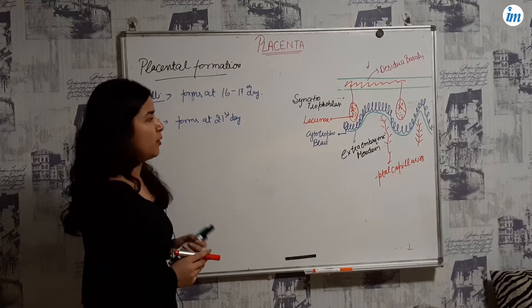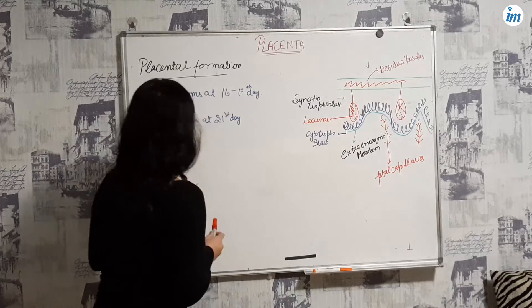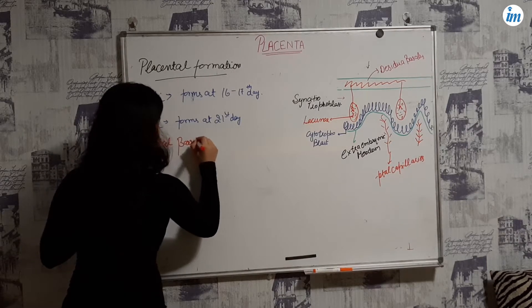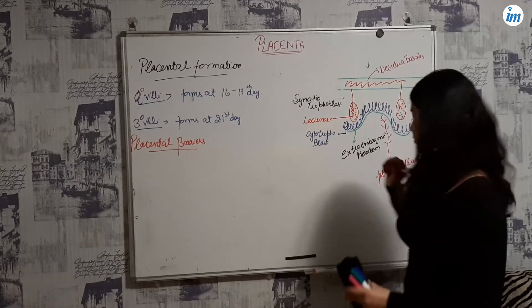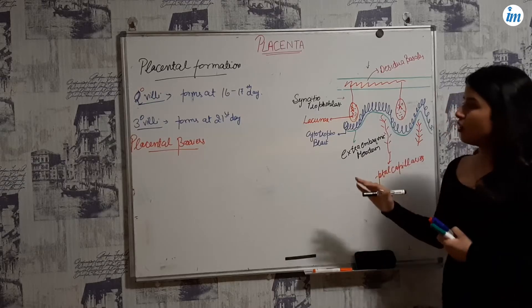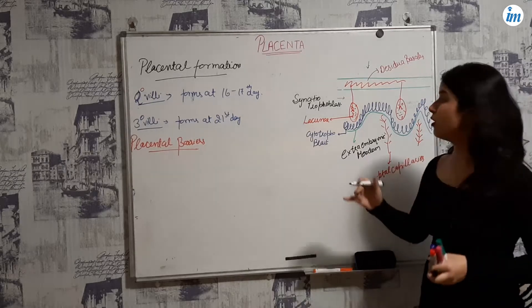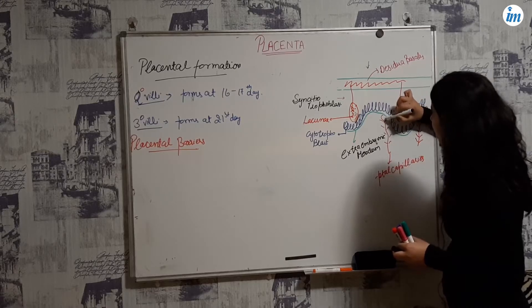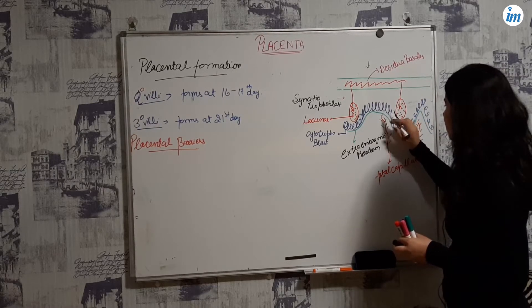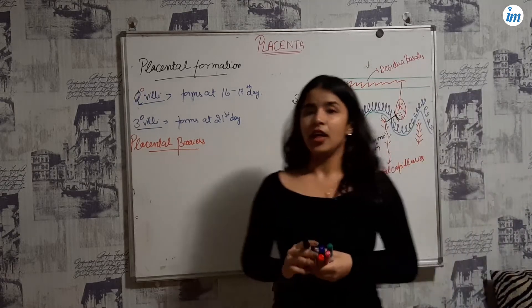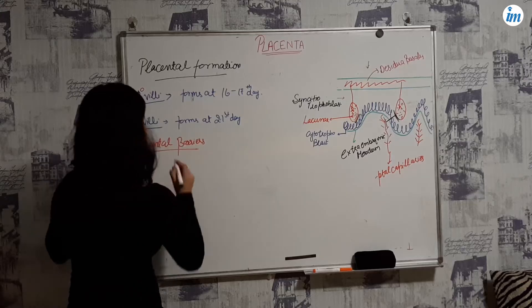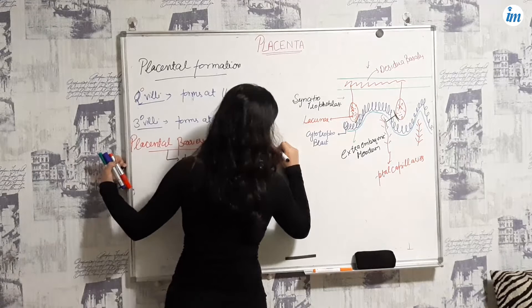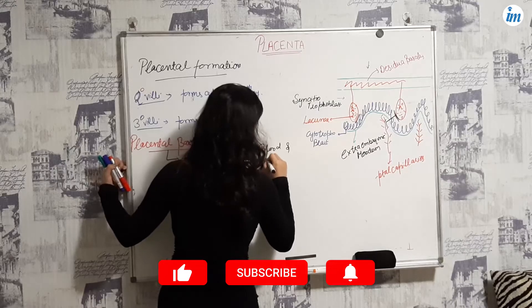Now let's discuss placental barriers. The placental barrier is formed between the maternal blood and the fetal capillaries. It is formed by maternal blood on one side and fetal capillary endothelium on the other.